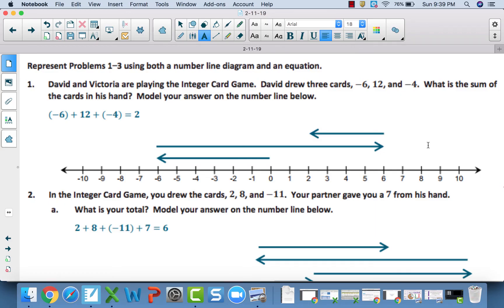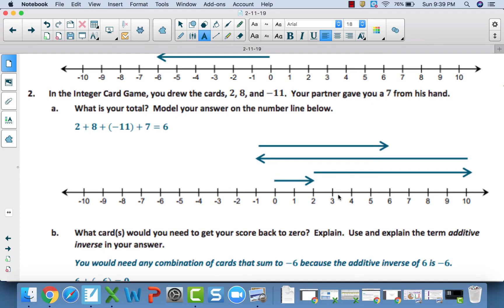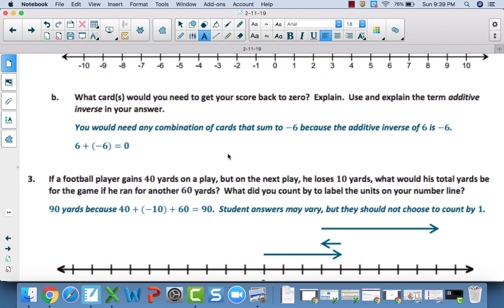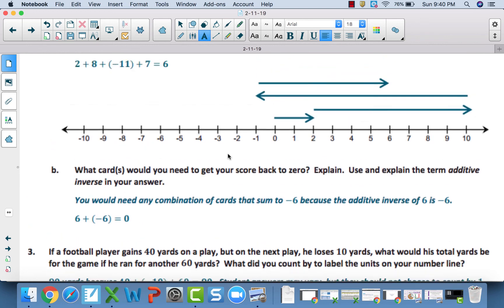The answer to the first problem set question is two. Your diagram should look like this as well. The answer to number two is six. Once again, down here is the diagram. You should have four different vectors because we have four different numbers here. For B, there is more than one possible answer. But if we are trying to get back to zero, we need any combination of cards that sum to negative six. Because you are trying to get from six back to zero. So, anything that sums to negative six, that additive inverse to get back to zero, I just happened to pick negative six. So, that would take me one shot instead of having to do like negative four and negative two. But anything that sum to negative six would get you back to zero.